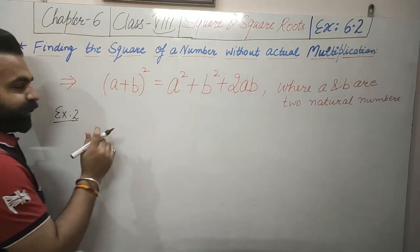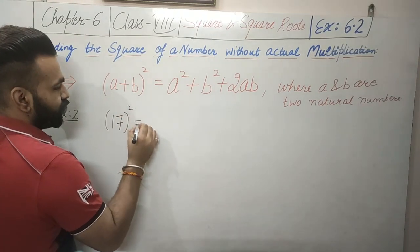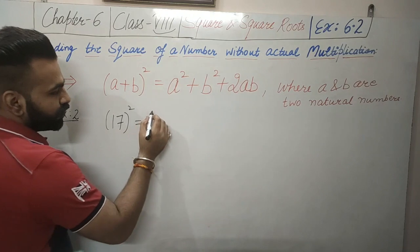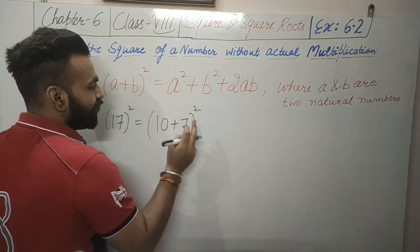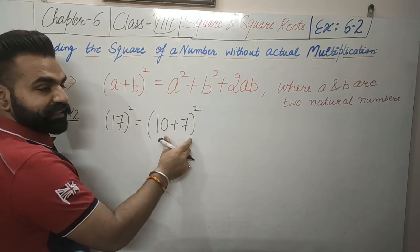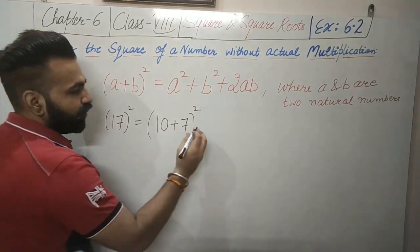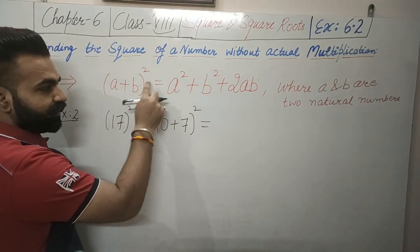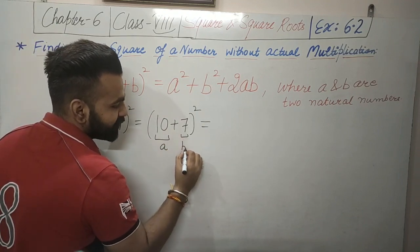Example number 2: 17 squared. We will split 17 into 10 plus 7. We always split in such a way — for example 18 becomes 10 plus 8, and 15 becomes 10 plus 5 — in this form. Now it is in the form of (a + b) whole square, where 10 is a and 7 is b.